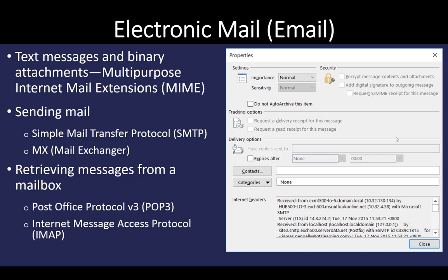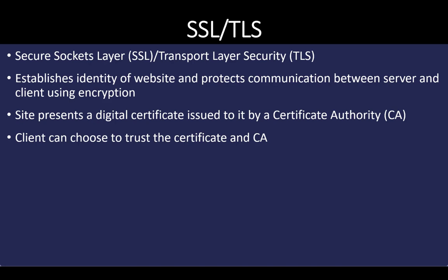Electronic mail uses three basic types of protocols: Simple Mail Transfer Protocol, which works in combination with a mail exchanger such as Exchange Server, and then POP3 and IMAP. Your email can use any of those three, and in fact may use them in combination. SSL and TLS — Secure Socket Layer and Transport Layer Security — provide confidentiality between the server and client using encryption. TLS is the current standard, and a certificate is issued to a website by a third party, which verifies the company information so consumers know they can trust the website.